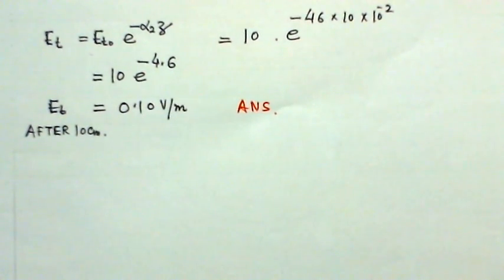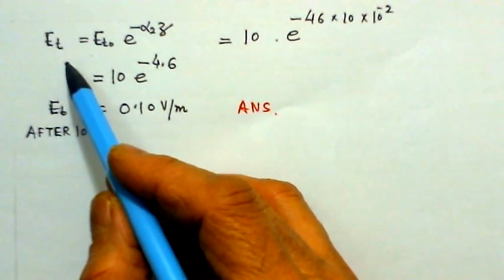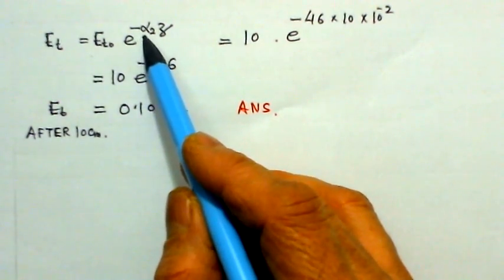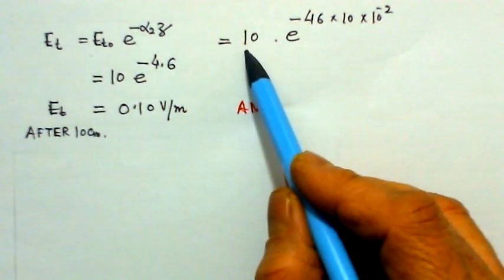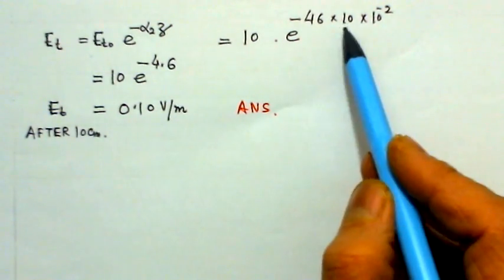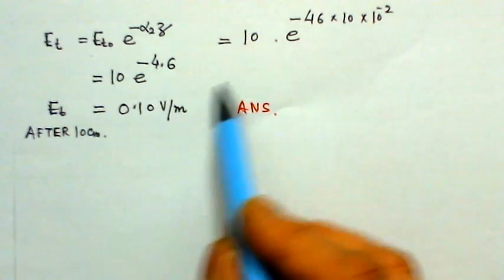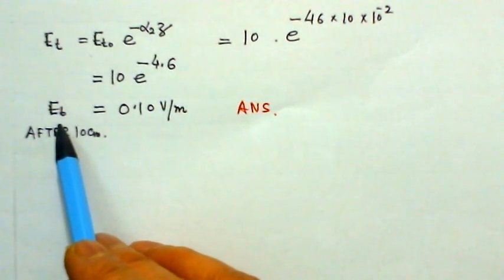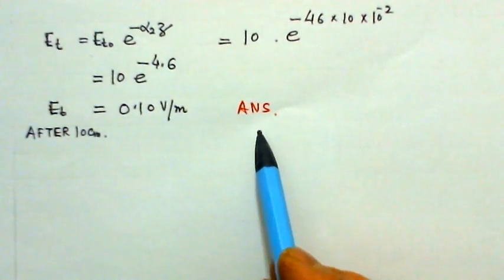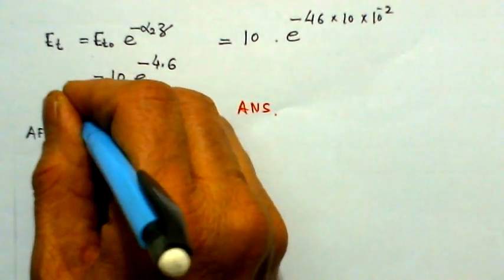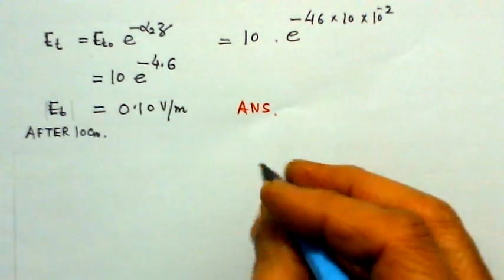Once we have found the attenuation constant, we can find the transmitted wave into the medium. Et = Et0 · e^(−α₂z), where α₂ is the attenuation constant in the second medium. Substituting α = 46 Np/m and z = 10 cm = 10×10⁻² m, this simplifies to 10 · e^(−4.6). Evaluating this, the magnitude of the transmitted electric field Et comes out to be 0.10 V/m. This is the answer — after 10 centimeters in the dielectric, the magnitude of the electric field is 0.1 V/m.